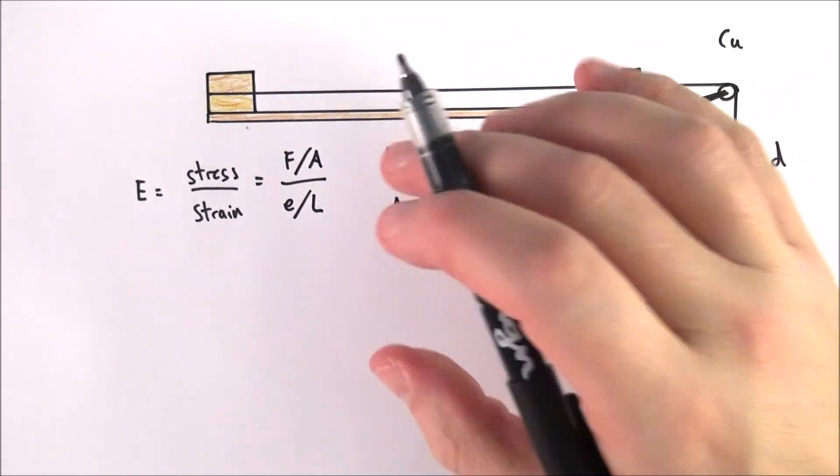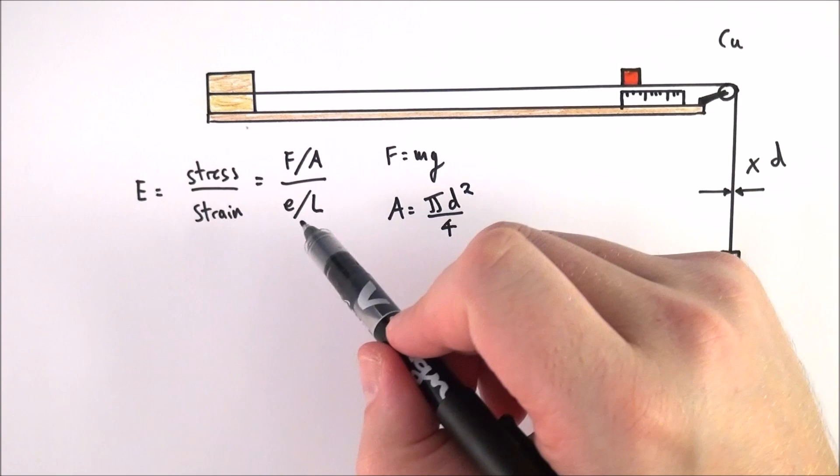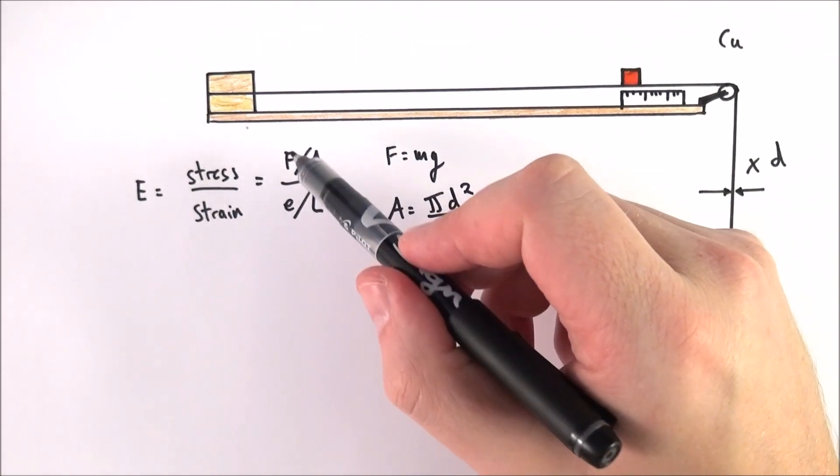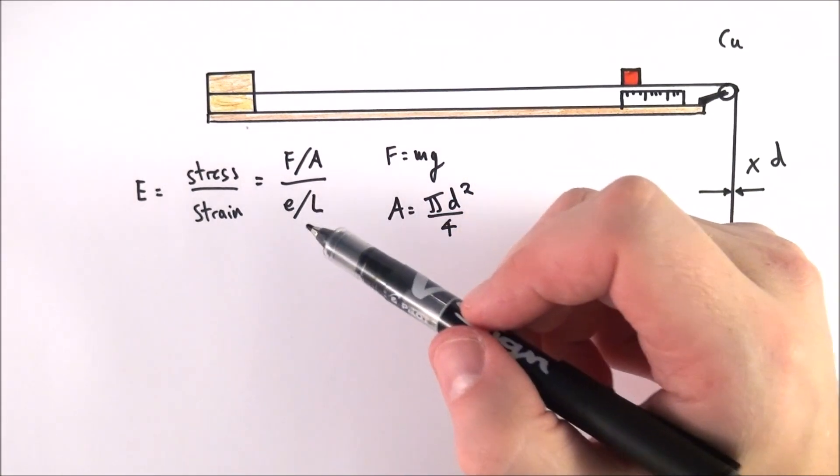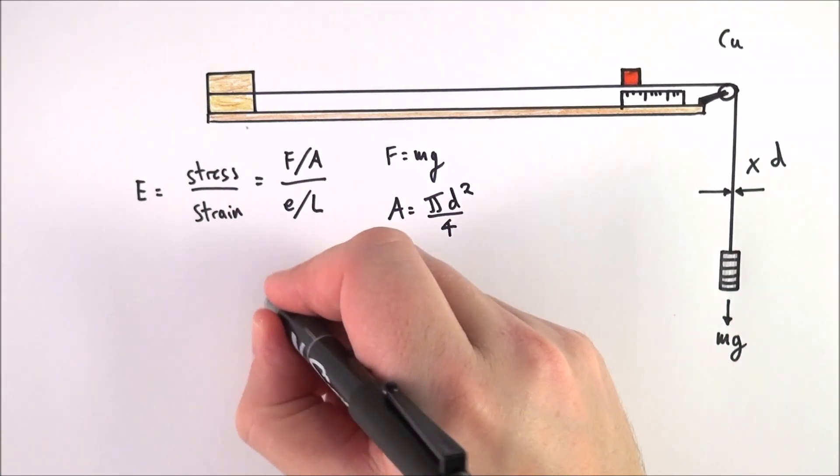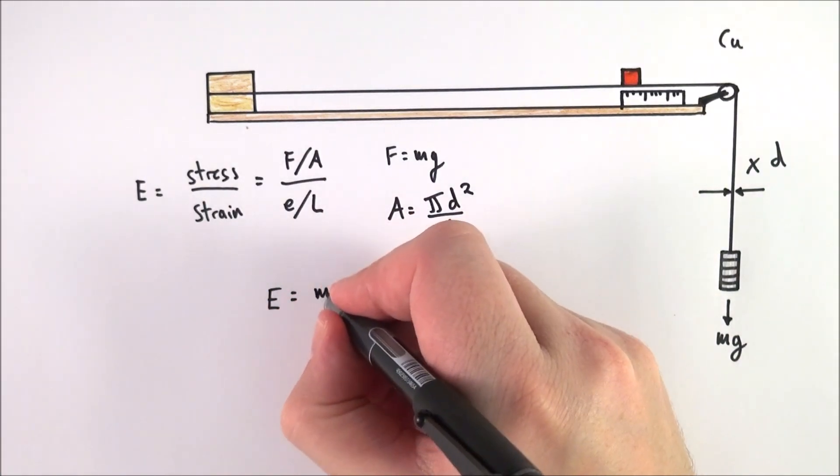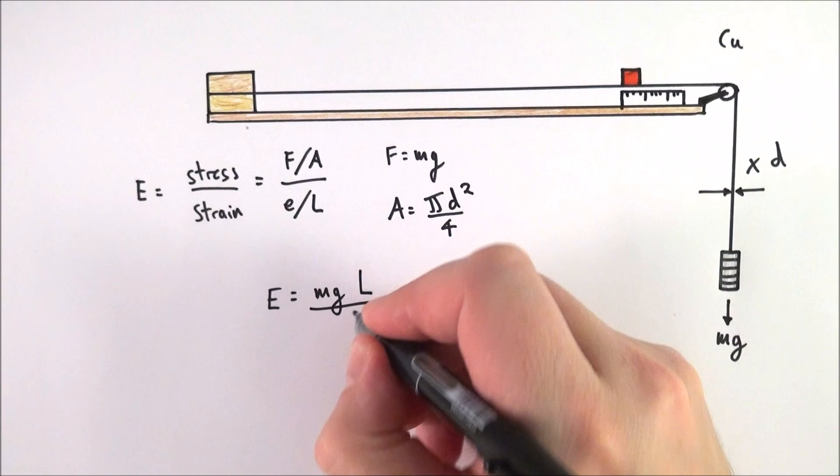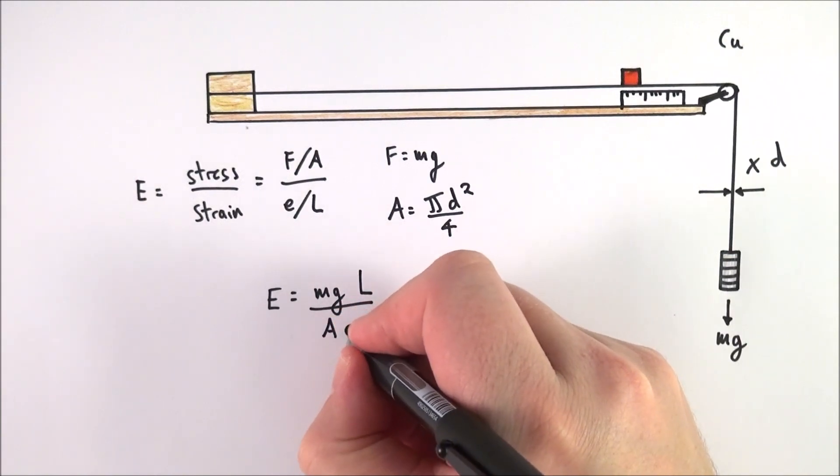Okay so what we can then do is we can take this equation here and we can rearrange it. We can bring the L up, we can bring the A down. And what we can say is that Young's modulus is equal to mg L over A multiplied by E.